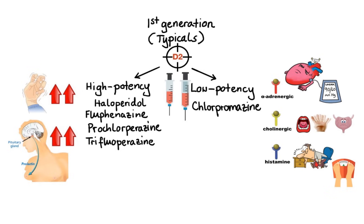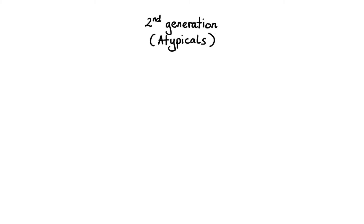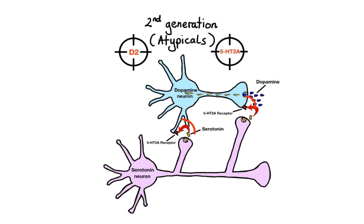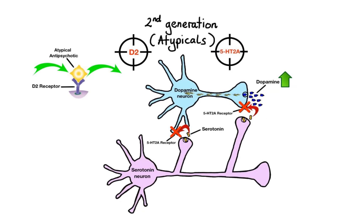Now let's move on to the second-generation atypical antipsychotics. In contrast to typical antipsychotics that primarily block only D2 receptors, atypical agents appear to block both D2 receptors as well as serotonin receptors subtype 2A. Because serotonin inhibits dopamine release, agents that block serotonin receptors may increase dopamine levels in brain areas that need it. Furthermore, atypicals occupy D2 receptors transiently and dissociate quickly, allowing for relatively normal dopamine neurotransmission. This combined D2 and serotonin receptor blockade is thought to significantly lower the incidence of extrapyramidal side effects, decrease negative symptoms, and improve cognition compared to typical agents.